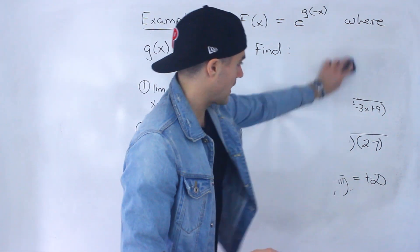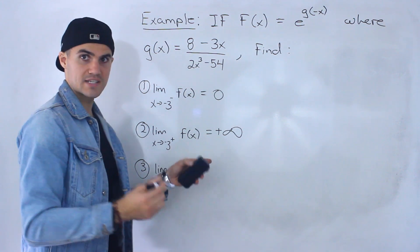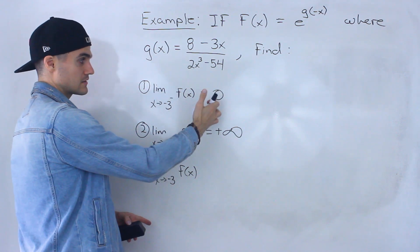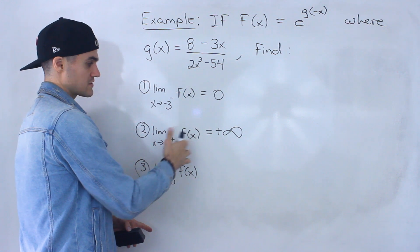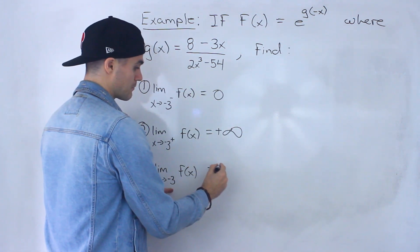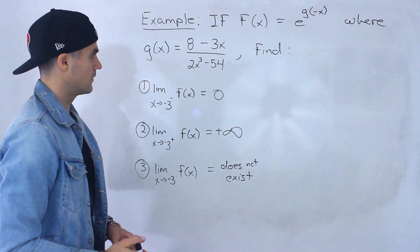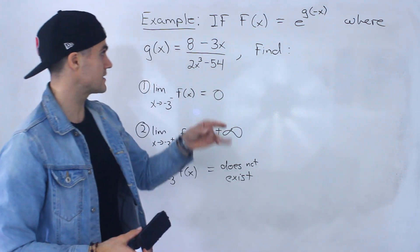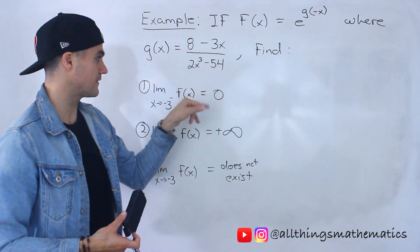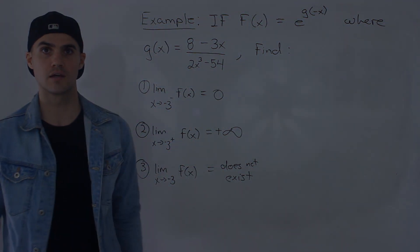For the third limit — the general limit as x approaches negative 3 — a limit must approach the same value from both sides. From the negative side it approaches zero, and from the positive side it approaches positive infinity. Since these values are different, this limit does not exist. The key steps were: first adjusting g of negative x, then factoring, and carefully analyzing the sign of each factor from both sides.